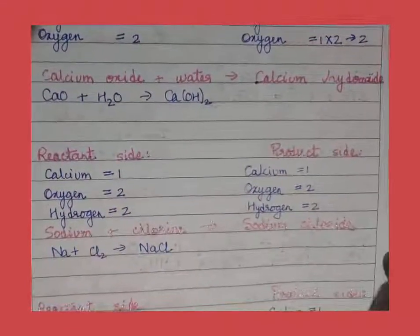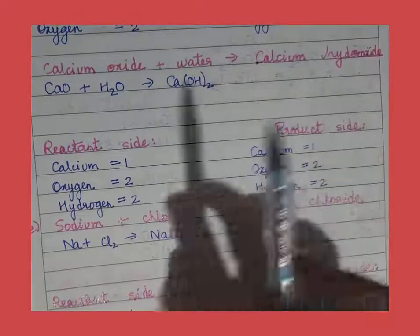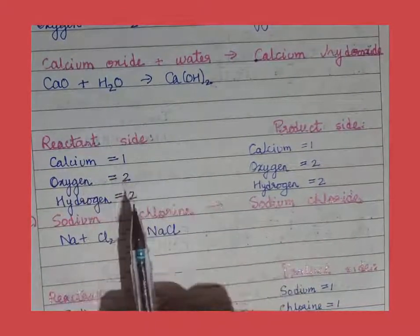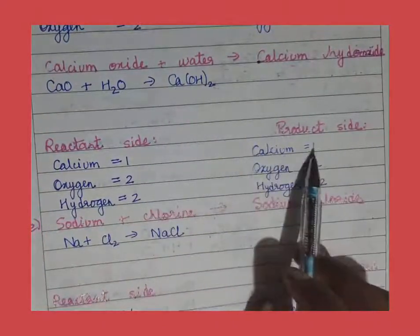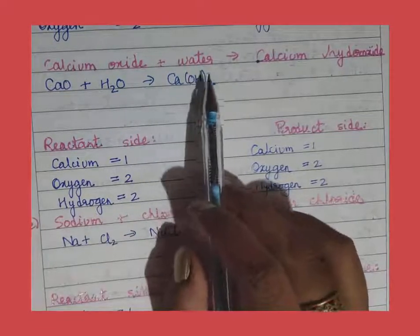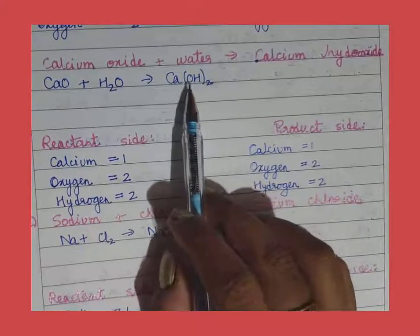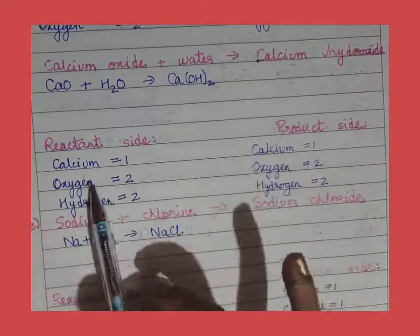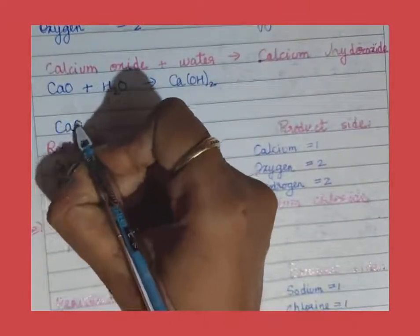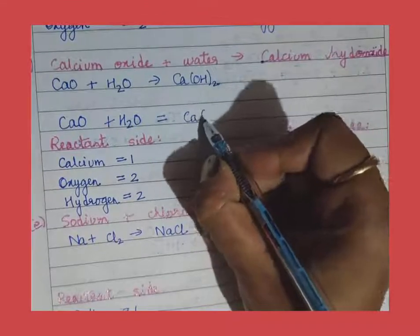Now let us move to the next one: calcium oxide plus water gives calcium hydroxide. On the reactant side, calcium is 1, oxygen is 1 + 1 = 2, and hydrogen is 2. On the product side, calcium is 1, hydrogen is 2. Always remember for radicals, the subscript stands for all the atoms inside the bracket. Calcium is already 1, oxygen already 2, hydrogen also 2, so the equation is already balanced. We simply remove the arrow and write the sign of equality.